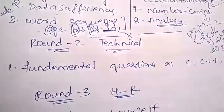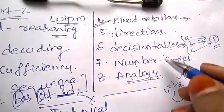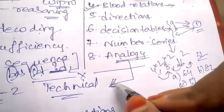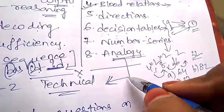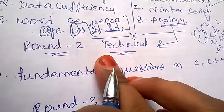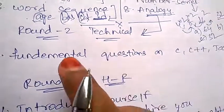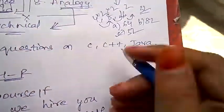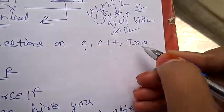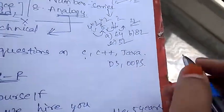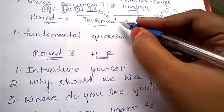Coming to the second round: if you qualify in the first round written test, you will be promoted to round two. Round two is the purely technical round. Under technical round there will be fundamental questions on C language, C++, Java, data structures, and OOPs.